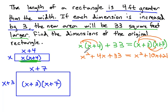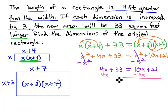Then we could start solving. You might notice that the x squareds are on both sides. If we subtract x squared from both, those subtract out, and we're just left with 4x plus 33. 4x plus 33 equals 10x plus 21. Moving the variables all to one side, we'll subtract 4x, and 33 equals 6x plus 21.